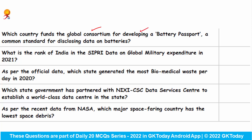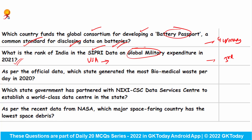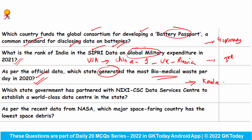Which country funds the global consortium for developing a battery passport, a common standard for disclosing data on batteries? This country is Germany. What is the rank of India in the SIPRI data on global military expenditure in 2021? India has been ranked third. The top five countries are: USA in first place, then China in second, India in third, UK in fourth, and Russia in fifth. As per official data, which state generated the most biomedical waste per day in 2020? The most biomedical waste per day was generated in Kerala in 2020. Which state government has partnered with NIXI CSC Data Services Centre to establish a world-class data centre? This is Tripura.